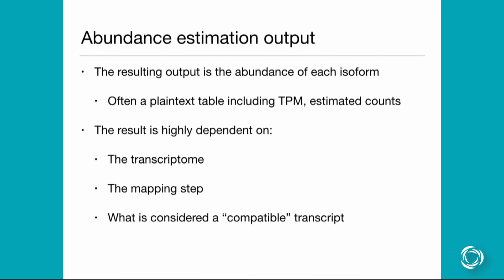And then what do you get out of one of these tools like Kallisto or Sailfish or Cufflinks? You end up getting basically an abundance estimate for every single isoform. It's often a plain text table. You have some transcripts and then you have a bunch of columns: TPM, estimated counts, maybe the FPKM, the length and the effective length which we didn't talk about but it's related to how long the fragments are in the experiment.